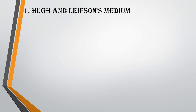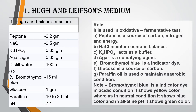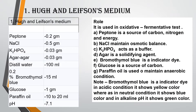Let's see the first one, that is Hugh and Leifson's Medium. The medium is prepared for 100 ml. The components are: Peptone 0.2 g, NaCl 0.5 g, K2HPO4 0.03 g, Agar Agar 0.03 g, Distilled Water 100 ml, 0.2% Bromothymol Blue 15 ml, Glucose 1 g, Paraffin Oil 10–20 ml, and pH is 7.1. Hugh and Leifson's Medium is used in the oxidative and fermentative test.